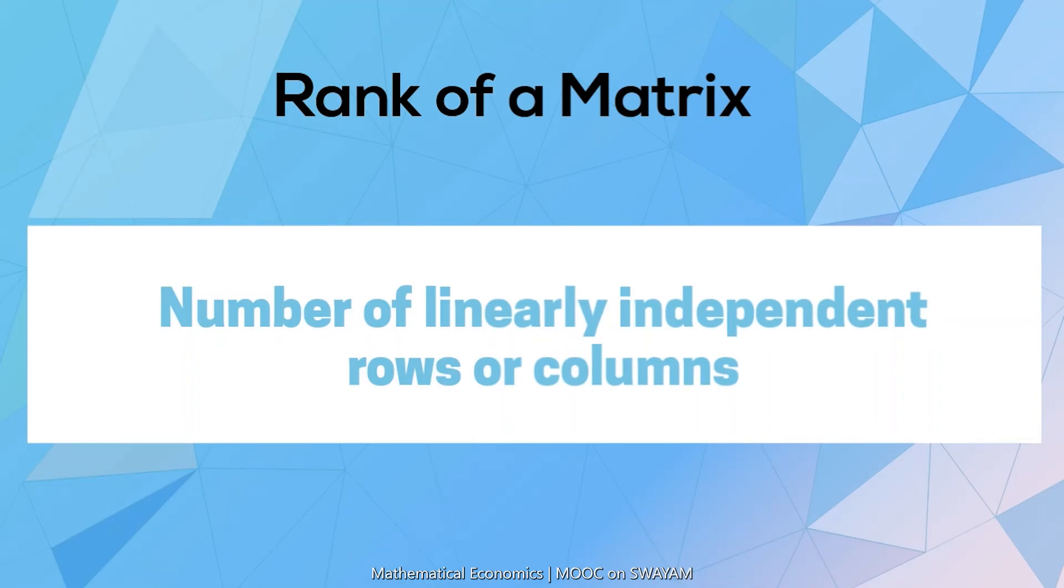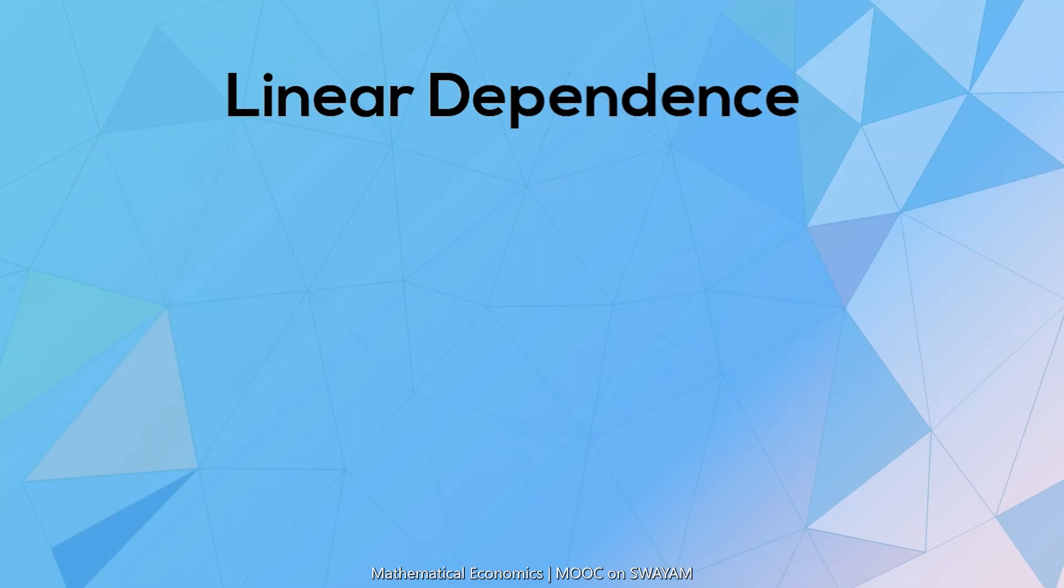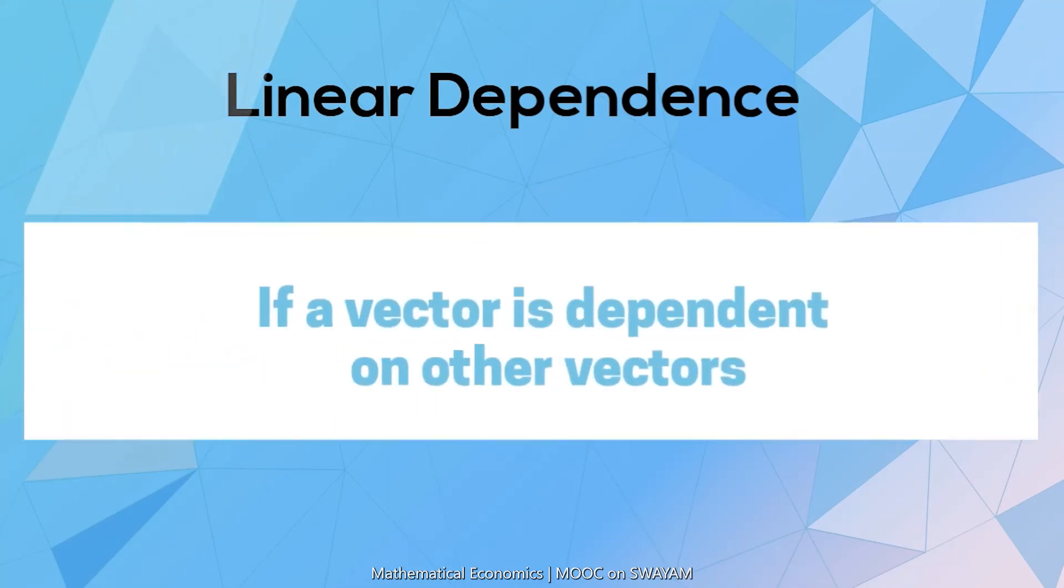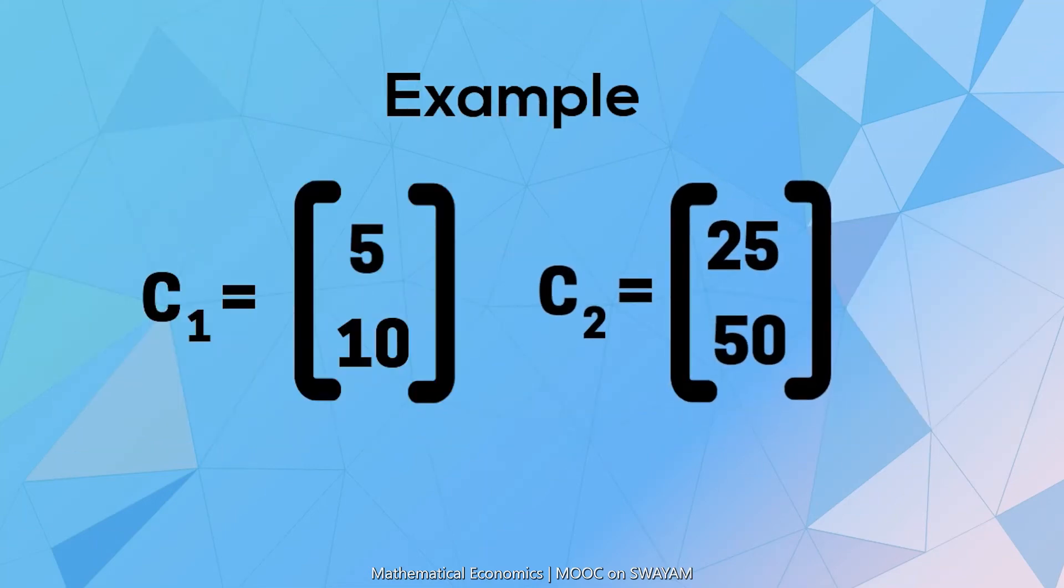If the vectors are dependent on some other vector, they are said to be linearly dependent. Otherwise, they are linearly independent. The two column vectors c1 equal to 510 and c2 equal to 2550 are linearly dependent because c2 is 5 times of c1.